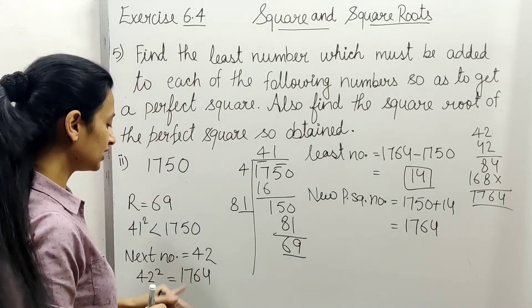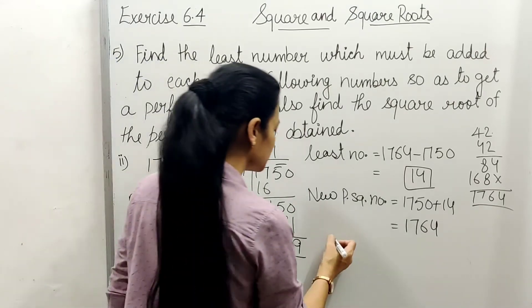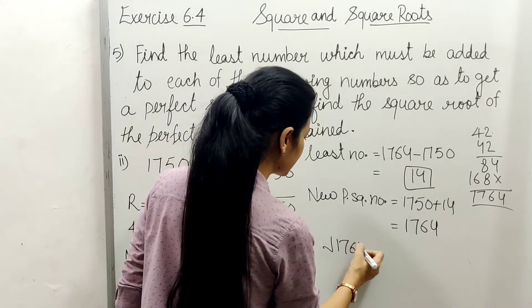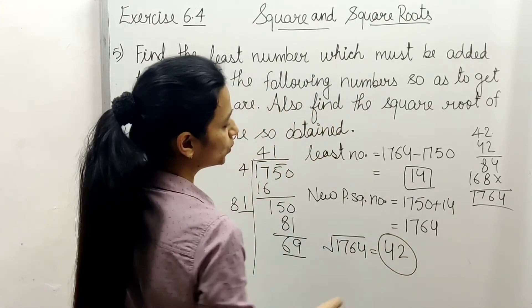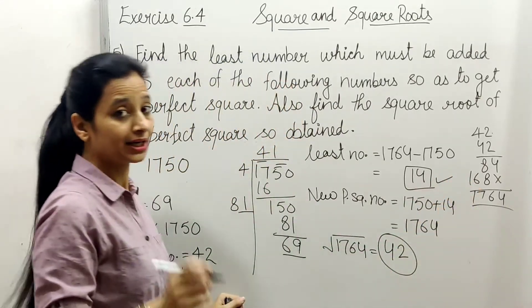And its square root will be 42. Square root of 1764 equals 42. So our answer is 42 and 14.